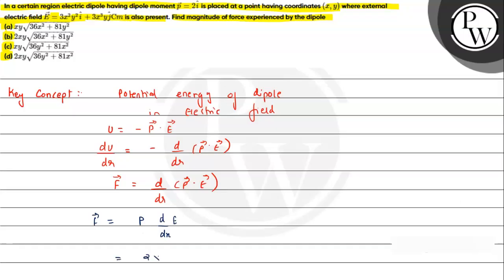So here we can write 2 times - when we differentiate, we will take the mod - differentiate with respect to x, so it will be 6xy² i cap plus 9x²y j cap.